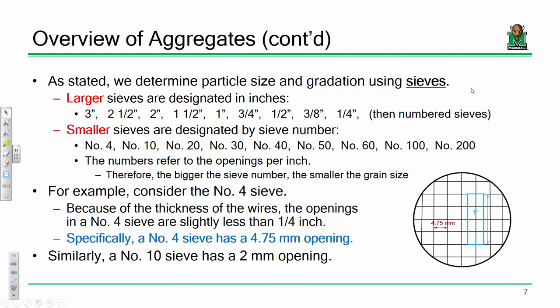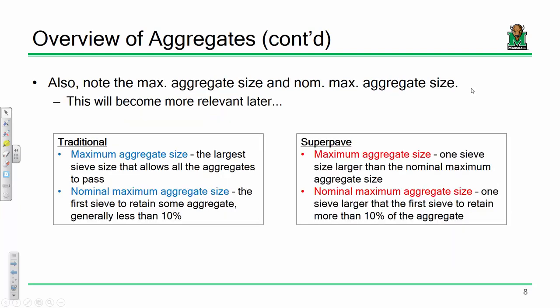Is everybody okay on sieve designations? Those are passing around — give those a check. You're going to get very familiar with those as the semester progresses. The number four and the number 100 were the same diameter and locked together. That's going to be one of the components of what we do in lab — we're going to stack a series of sieves together in what's called a sieve nest to determine the gradation of a particular sample.